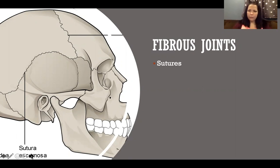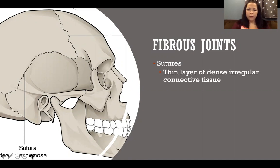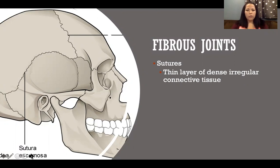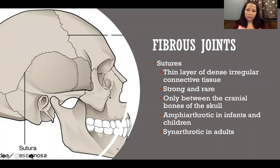The first type of fibrous joint is a suture. We only have these between the cranial bones of the skull. They're joined by a thin layer of dense irregular connective tissue — hopefully you already watched the arthrology lecture where I talked about what dense irregular connective tissue is. Sutures are very strong, but very rare, and we only have them between the cranial bones of the skull.